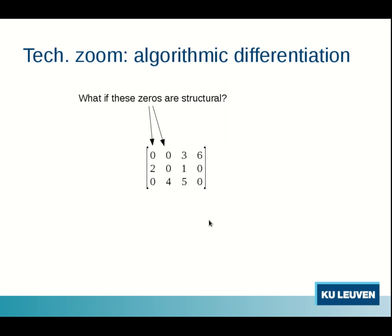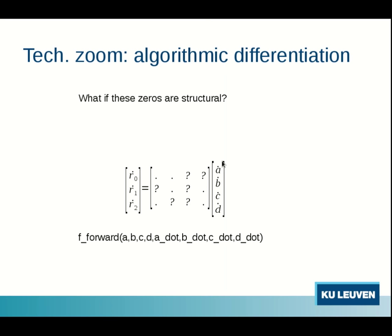So suppose we know in advance that those zeros here, they will always be zero. They will be structurally zero. Then we care about less entries of the Jacobian. So let's look at the relation again between forward sensitivities and seeds. So imagine that we would choose a seeding of 1 1 0 1 in this case.